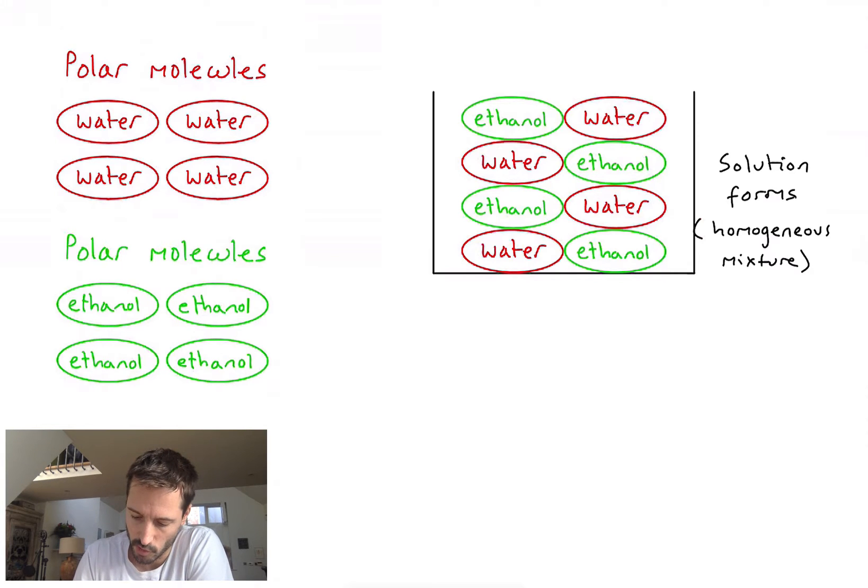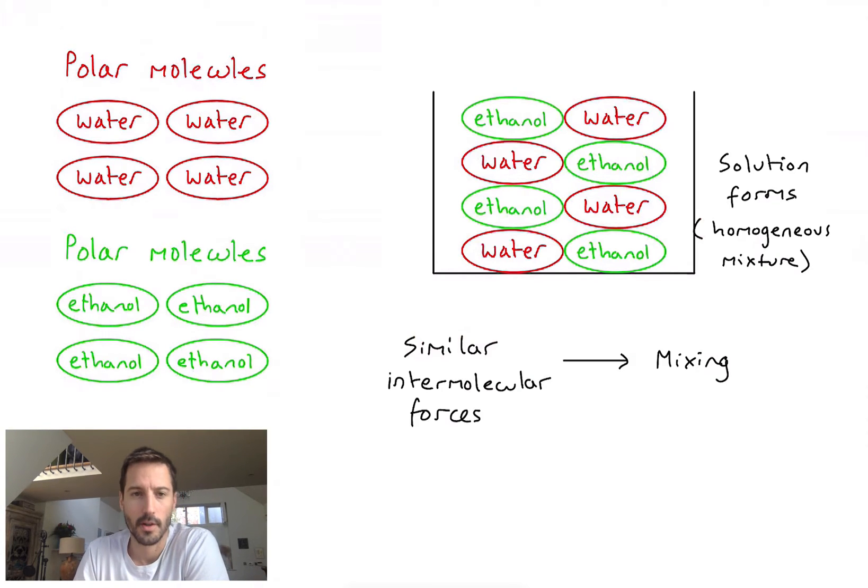So why have they mixed in contrast to the previous example? Well, in this case, because they're both highly polar molecules and can form strong intermolecular forces, they're actually equally as happy to form those attractions with molecules from the other substance as they are to form interactions with molecules of the same substance. So we get nice mixing in our mixture to the extent that we form a solution here.